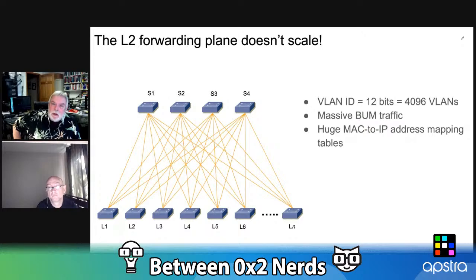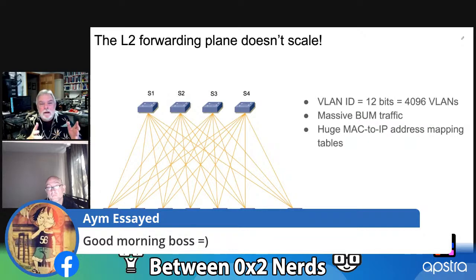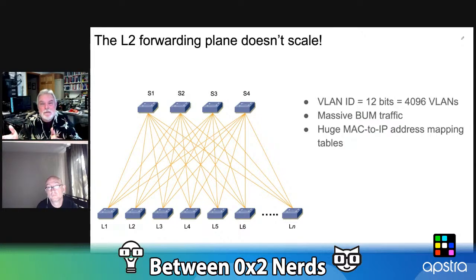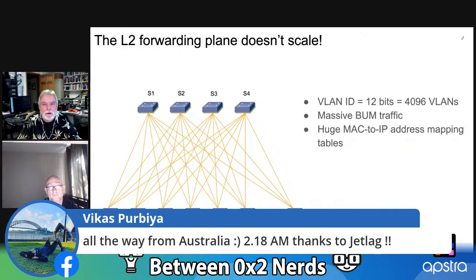This especially applies if your tenants are not just different organizations within your enterprise, but perhaps you're a service provider with completely different customers. They might want to use the same VLAN IDs — the same concept as overlapping IP addresses at layer three can also happen at layer two.